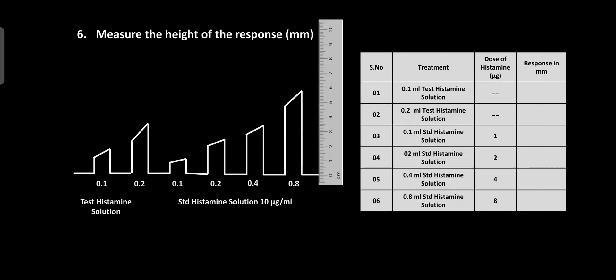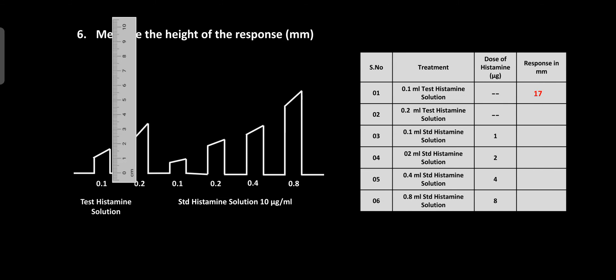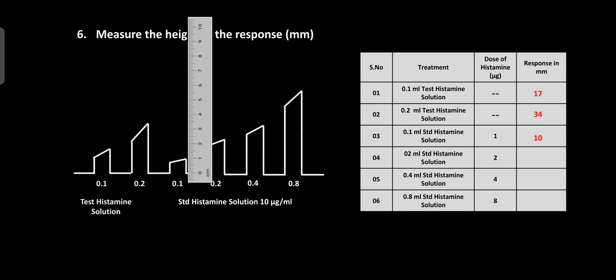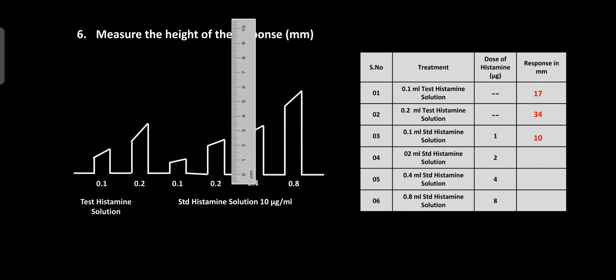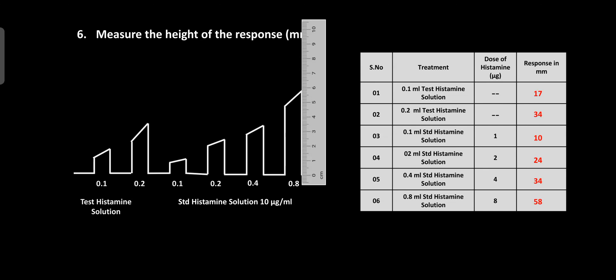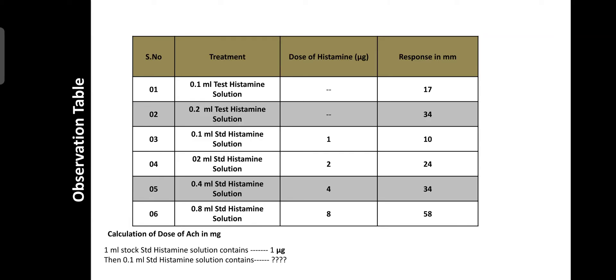Measure the height of each response in mm. The 0.1 ml test solution response is about 17 mm, and the 0.2 ml test solution response is 34 mm. For standard solutions: 0.1 ml gives 10 mm, 0.2 ml gives 24 mm, 0.4 ml gives 34 mm, and 0.8 ml gives 58 mm. The 0.2 ml test response matches the 0.4 ml standard response, so the matching bioassay is complete.